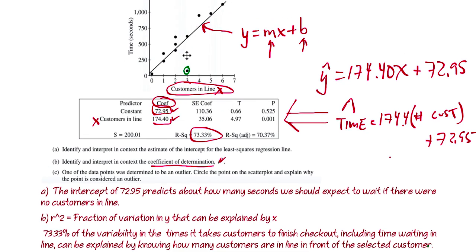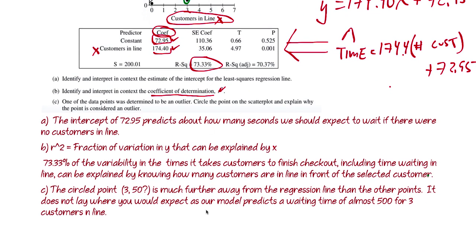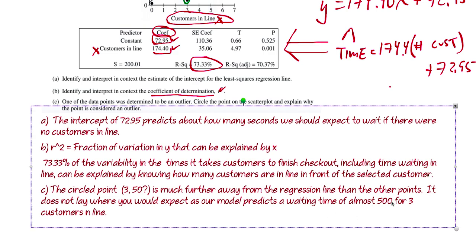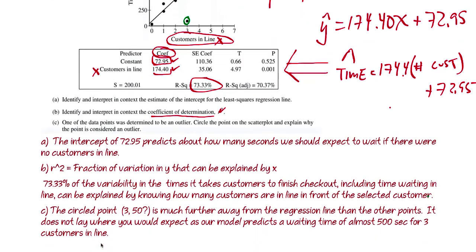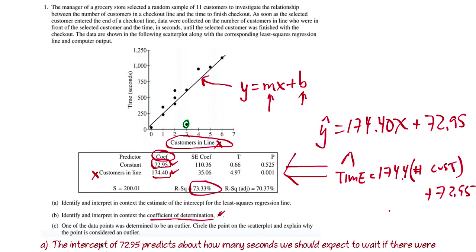I'm going to say almost 500, around 500. So as our model predicts a waiting time of almost 500, I should be really, really specific here, seconds for three customers in line. And I should fix my typo. That should do it. I mean, that's a pretty easy free response question. That is 2018 number one. Good luck out there.